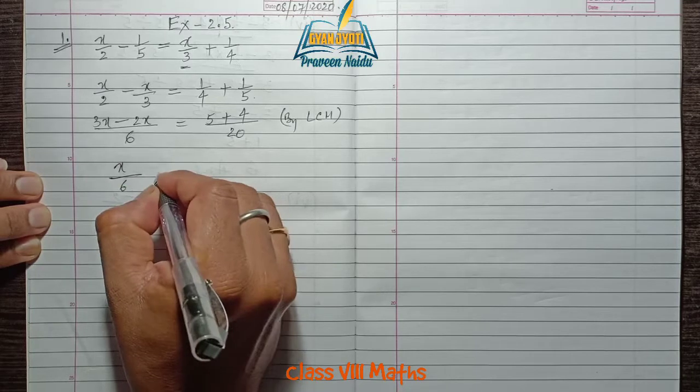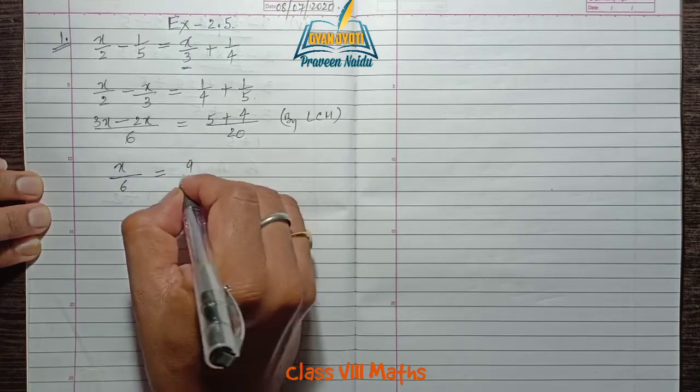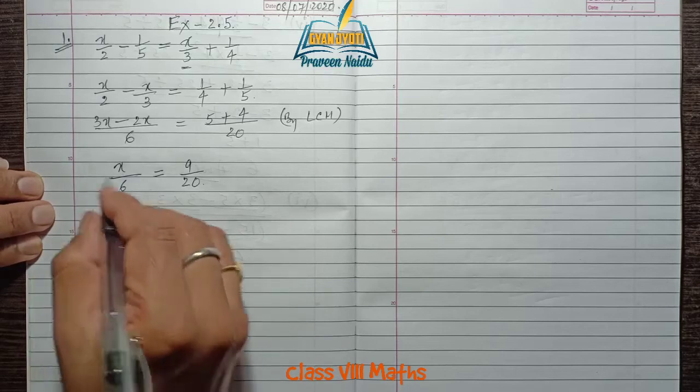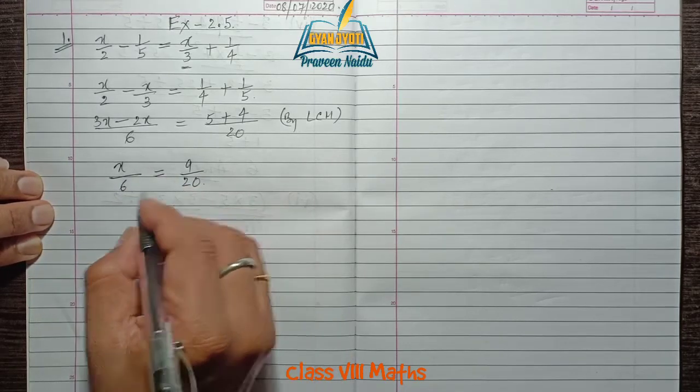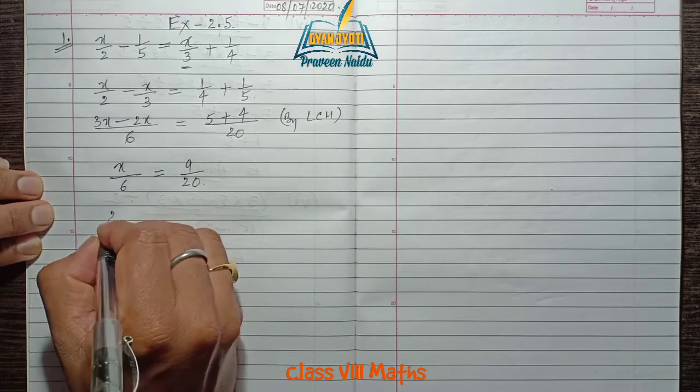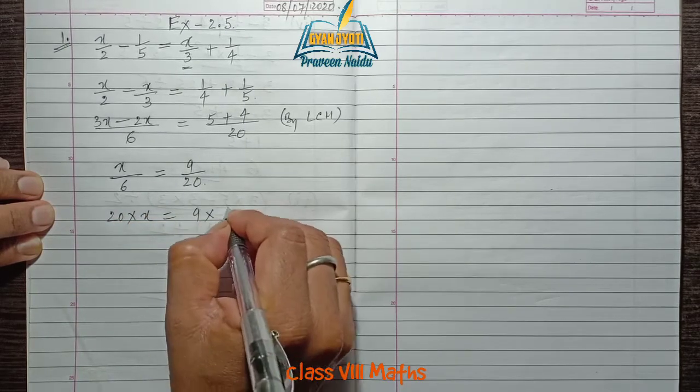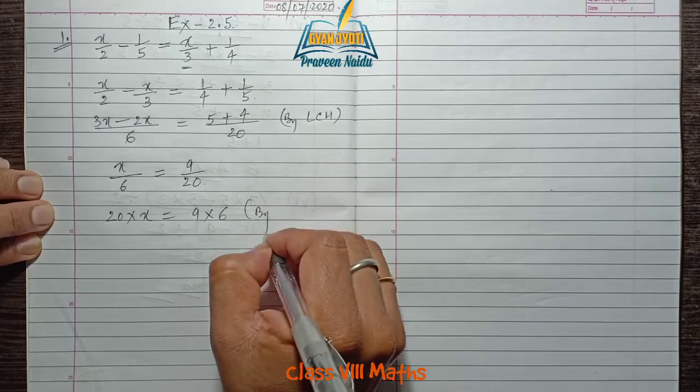Solving further, 3x - 2x equals x/6, and on the right, 9/20. Now by cross multiplication, multiply x by 20 and 9 by 6.